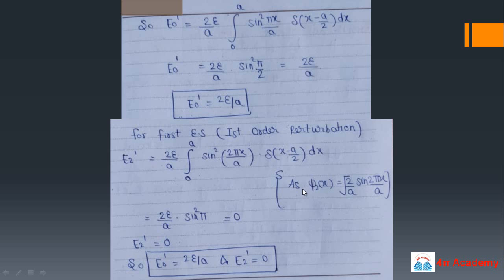For the first excited state (n = 2), the wave function is χ_2 = √(2/a) sin(2πx/a). Similarly applying the delta function at x = a/2, we evaluate sin²(π) = 0 since sin(π) = 0. Therefore the first-order correction to the first excited state energy E_2' = 0.